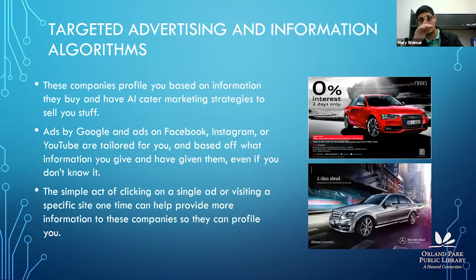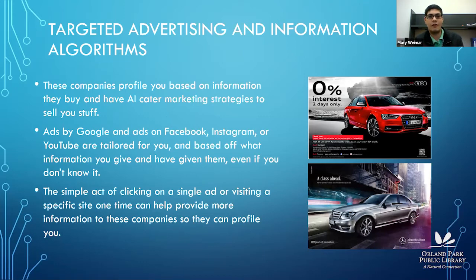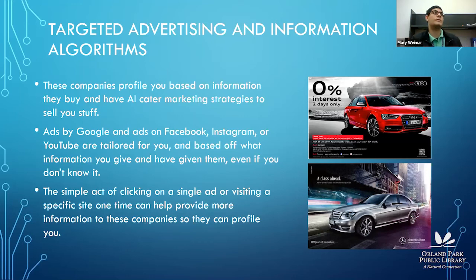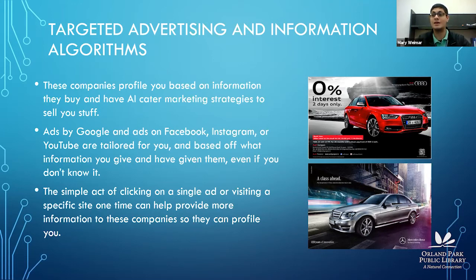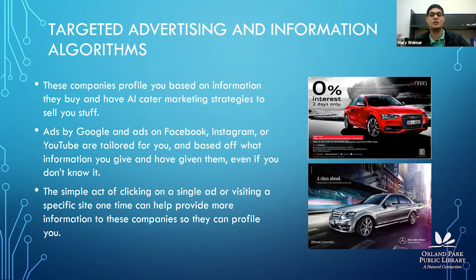These companies profile you based on information they buy and have an AI cater marketing strategies to sell you stuff. There are billions of people using the internet, so they leave it to computers — super smart AI that figures out this person likes all this stuff. Their algorithm shows that 95% of people who also liked all this stuff are willing to spend money on these things. Because they've cast such a wide net with billions of users' worth of information, they know what works, what sells, and what kinds of stuff to sell to what kinds of people. They have all the data required to make insane amounts of money.